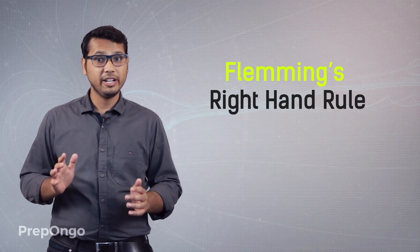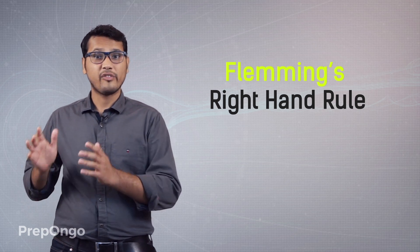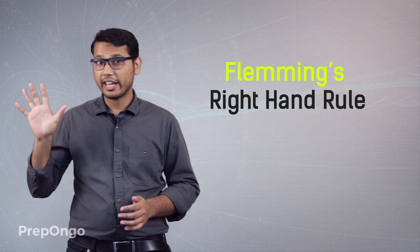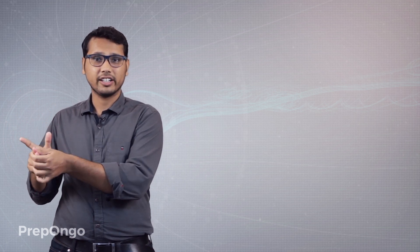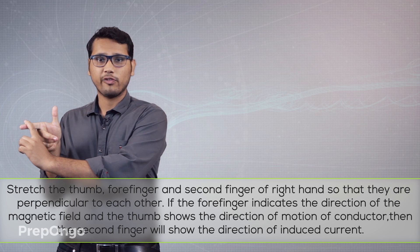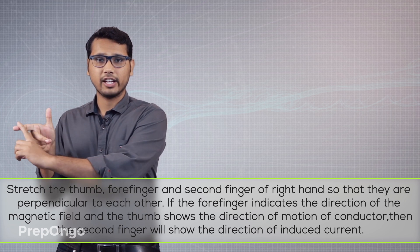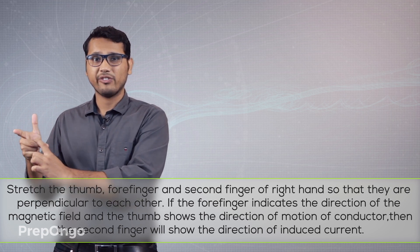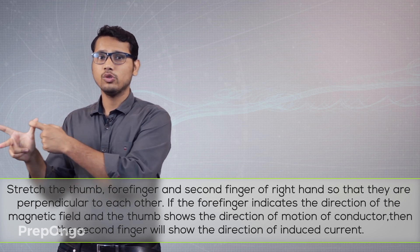As the name indicates, it is Fleming's Right Hand Rule, so we have to take our right hand — don't take your left hand, otherwise you will get the wrong result. Take your right hand with the thumb, forefinger, and second finger arranged so that they are mutually perpendicular to each other: the thumb is perpendicular to the forefinger, the forefinger is perpendicular to the second finger, and the second finger is perpendicular to the thumb.